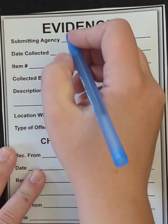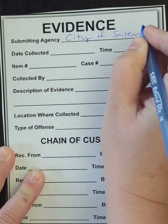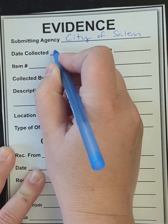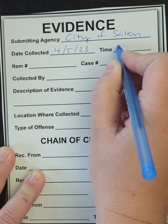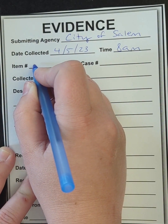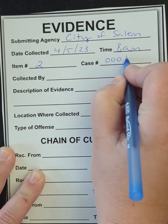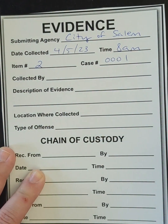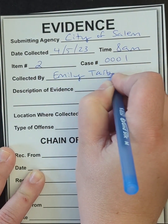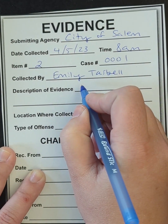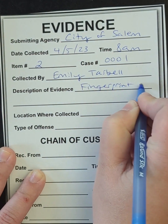For our submitting agency — this is whoever we're working for — I'm just going to say City of Salem. Today's date is April 5th, 2023. I collected this at 8 a.m. The item number: let's say this is our second piece of evidence we've collected. Case number, I'm just going to do 0001 — that's unique to whatever case you're on. Collected by myself. And the description of evidence is fingerprint on paper.